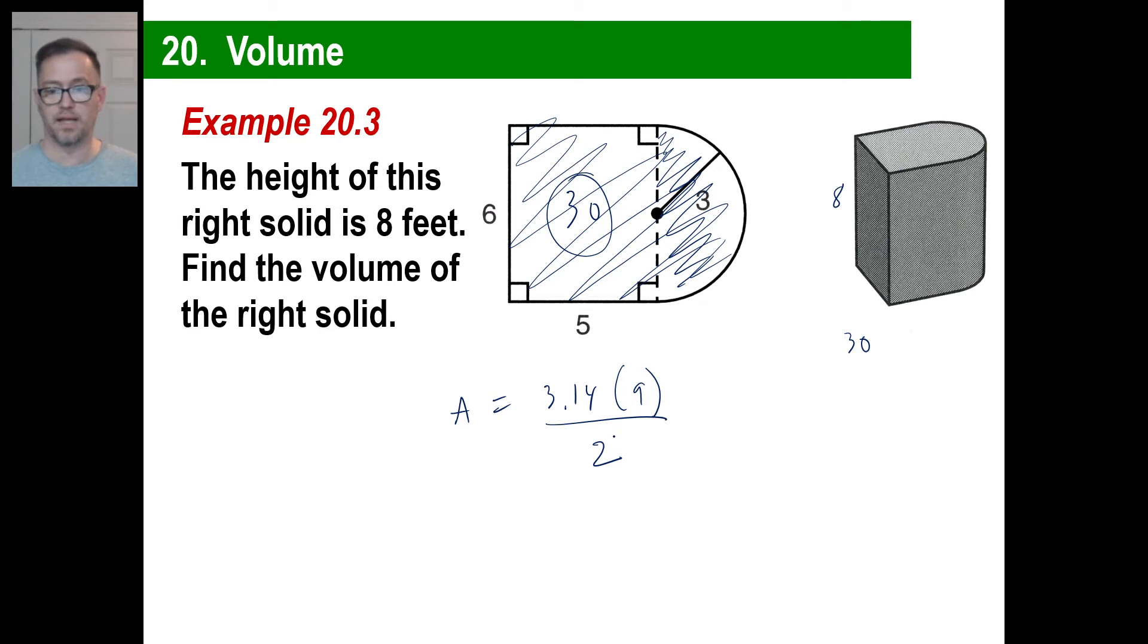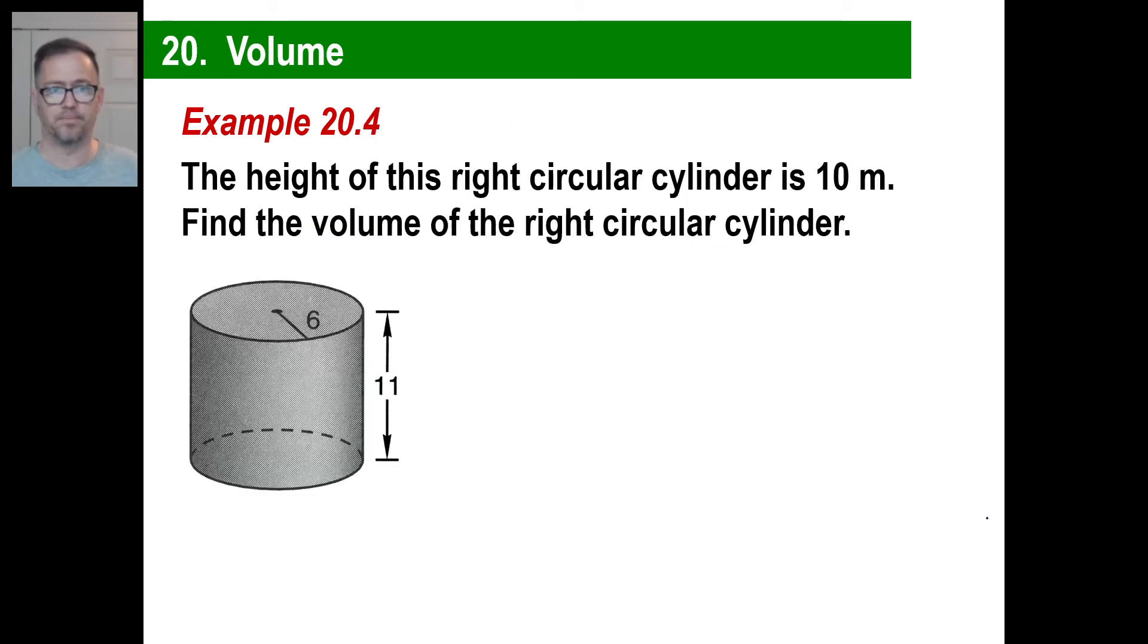We'll put this over here somewhere. All right. 3.14 times 9 divided by 2. Well, if you did all the arithmetic, you'd get 28.26. Then you'd divide by 2, and that would give you 14.13. You'd add that together. 44.13. Then you would multiply by 8. Remember, because if you just put 44.13, that means that's how many cubes will fit in one layer. You want 8 layers. So, you're multiplying by 8. Boom. There you go. That's going to be 353.04. And that will be cubic feet with a 3. There you go.